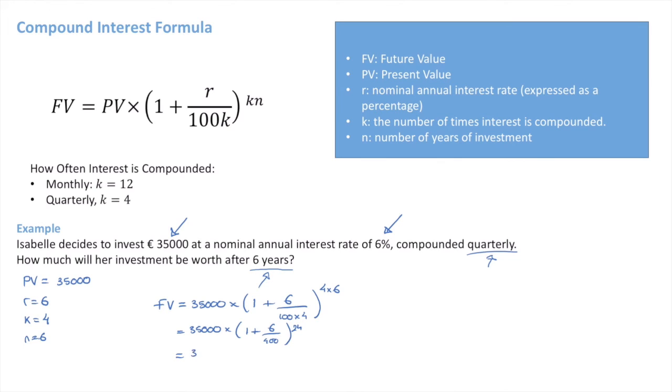we find that this is 35,000 times 1 plus 0.015 raised to the power of 24. Finally, we can write this as FV equals 35,000 times 1.015 raised to the power of 24.